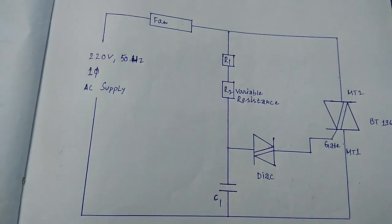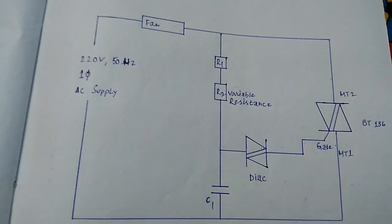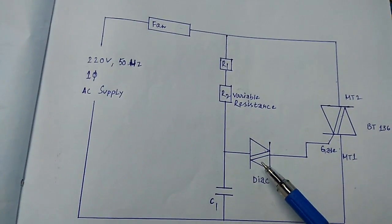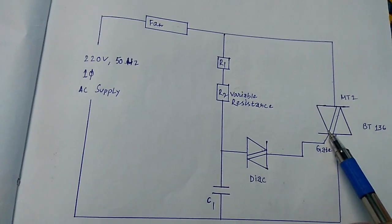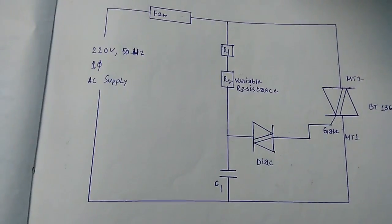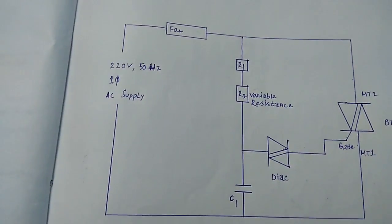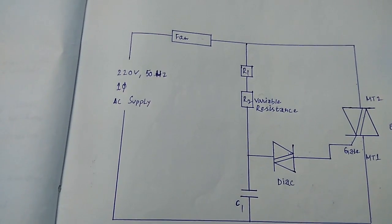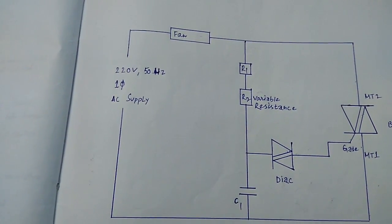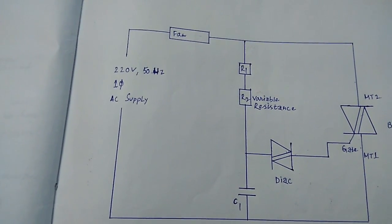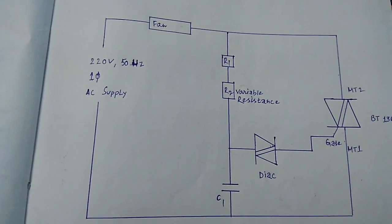Now we start discussing the working principle. We have two concepts about two devices used: one is DIAC, another is TRIAC. A DIAC is a full wave or bidirectional semiconductor switch that can be turned on in both forward polarity and reverse polarity. It's a four layer semiconductor device.